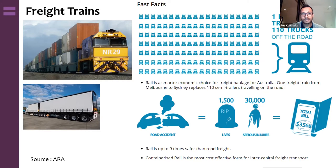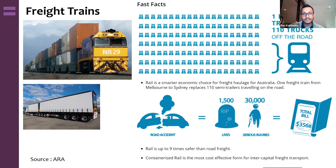According to the Australasian Railway Association, one freight train equals 210 road trucks. That significantly reduces road accidents and saves lives. Rail freight is consistently safer and more cost-effective than road freight, reducing costs to government, insurers, and individuals.